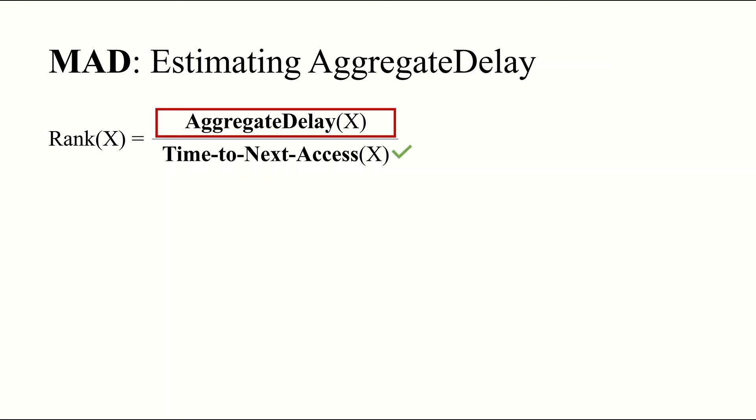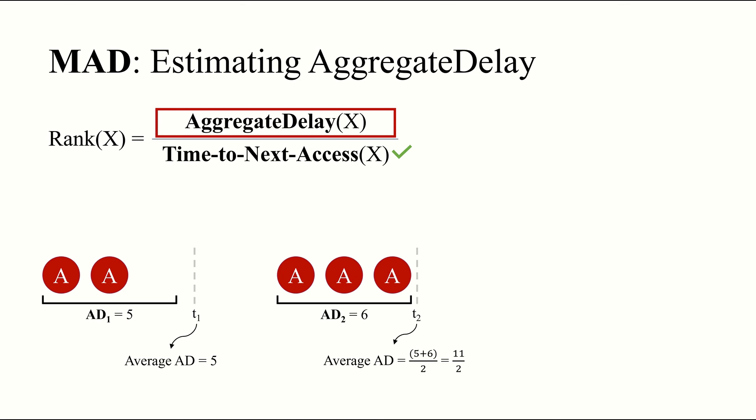So now that we have the denominator, let's look at how to compute the numerator, or an object's aggregate delay. To do this, we pretend that every past request to the object resulted in a cache miss, incurring some delay cost. Then, we use the average of these delay costs over an object's entire lifetime as an estimate of its future aggregate delay. Here's an example. Let's say we have Z equals 3, and we see two consecutive requests to object A. At time t1, we would compute object A's average aggregate delay as 5. Later, we have three consecutive requests to A. At time t2, we would update our estimate of A's aggregate delay as the average of the latency cost seen so far, yielding 11 over 2. If a fourth request to A appears immediately afterwards, we would once again update our aggregate delay estimate at time t3. We call this estimator the average aggregate delay, and while it's simple, we find that it serves as a good heuristic for an object's true aggregate delay, with a Pearson correlation coefficient of 0.7 between the two.